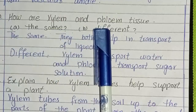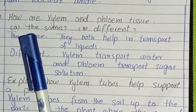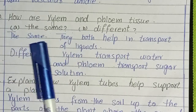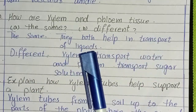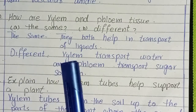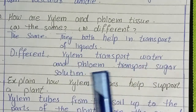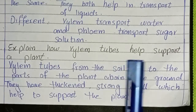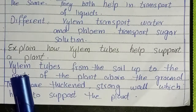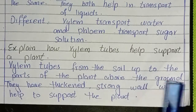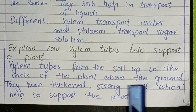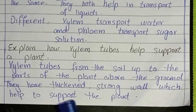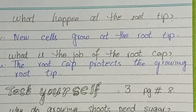How are xylem and phloem tissue — the same or different? Answer: The same — they both help in transport of liquids. Different — xylem transports water and phloem transports sugar solution. Explain how xylem tubes help support a plant: Xylem tubes run from the soil up to the parts of the plant above the ground. They have thickened, strong walls which help to support the plant.